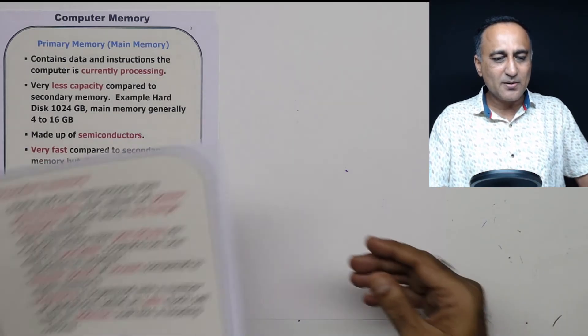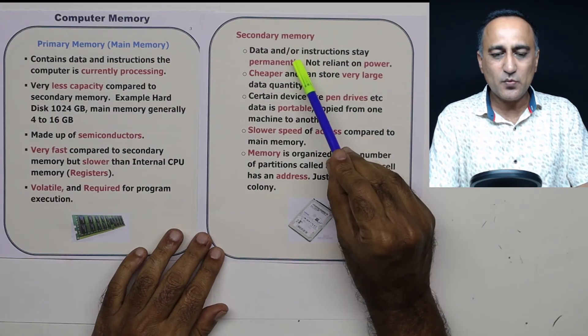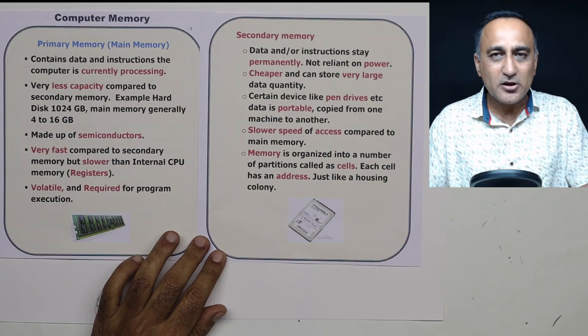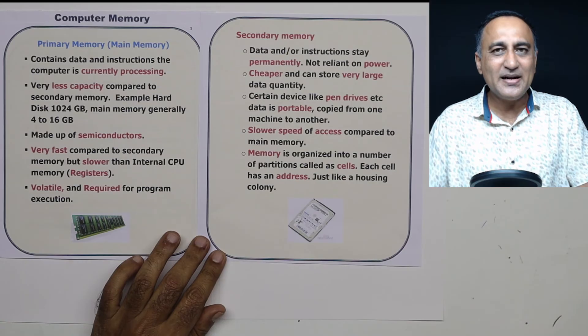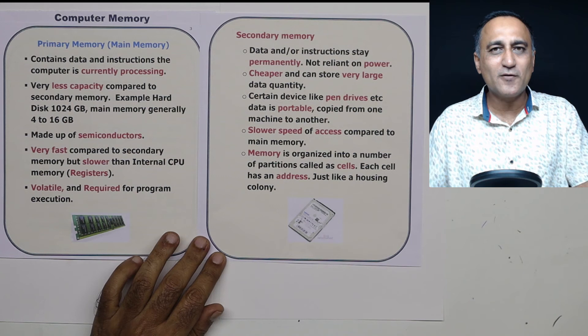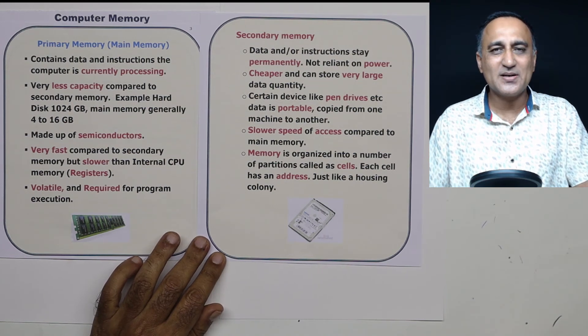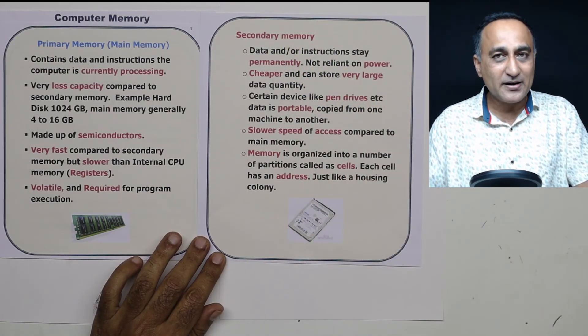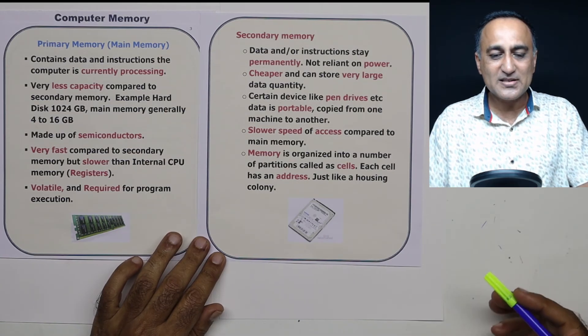Now, let me give you a little more idea about the secondary memory. Secondary memory is that memory which contains data or instructions which are not currently being used by the CPU or you can be storing data permanently in that. For example, we do a census count. That means the population count of India. That data is not going to be used always. It needs to be stored somewhere. So that is going to be stored in the secondary memory. It could be a hard disk. It could be a magnetic tape. It could be a pen drive. It could be a DVD. These are all examples of secondary memory.